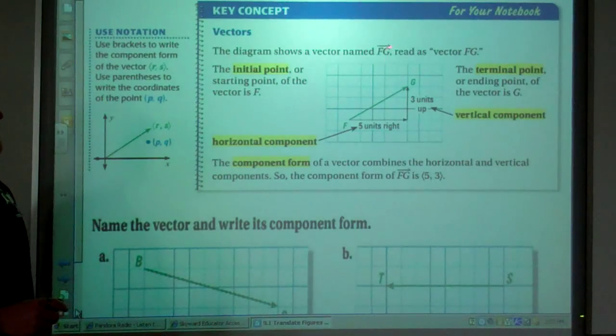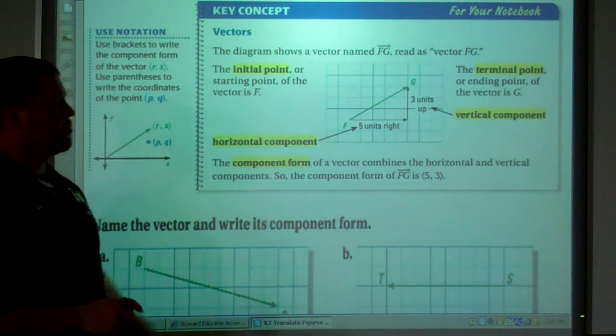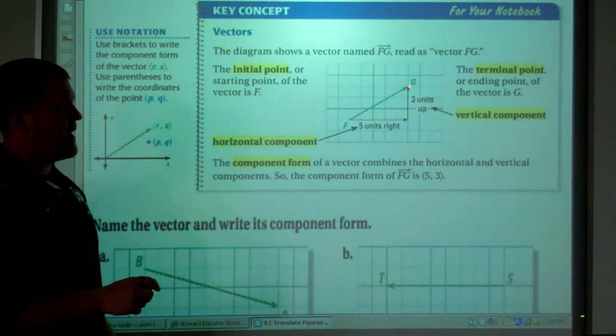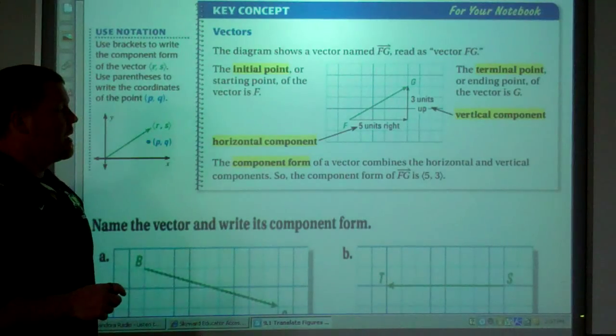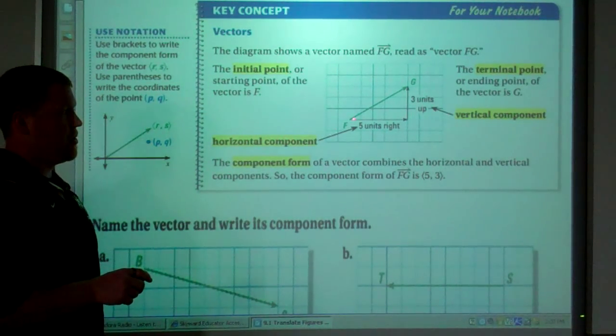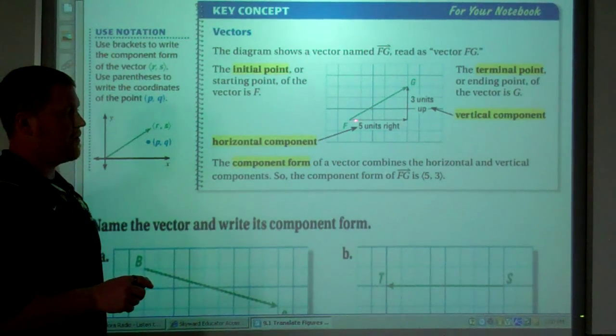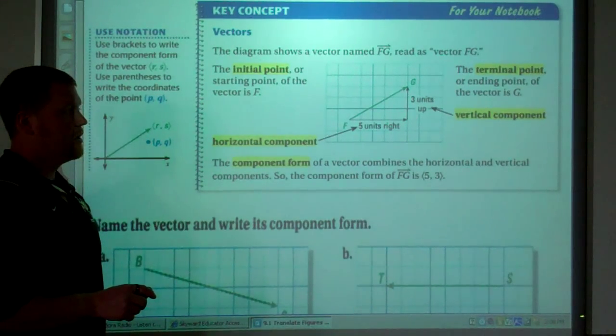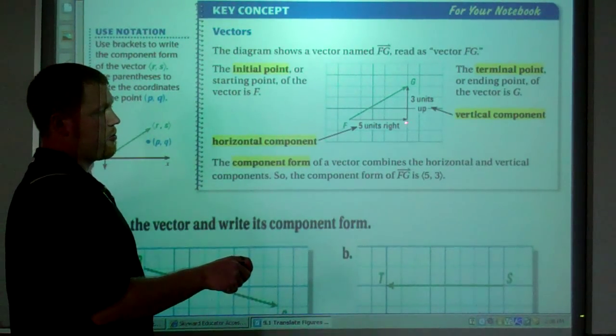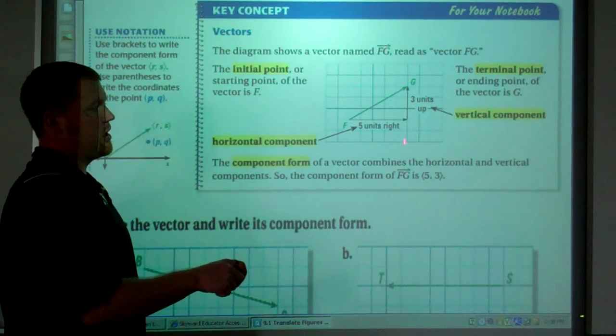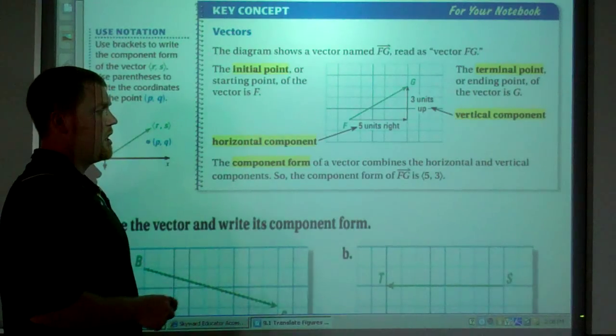The diagram shows a vector named vector FG. The initial point is point F. The terminal point, where you end, is point G. So initial point, terminal point, where you start, where you end. You have a horizontal component. So from point F, how am I going to get to point G? My horizontal component is five units to the right. And in math, when we talk about right, we associate that with positive numbers. And then three units up to get to point G. And again, up we associate with a positive number. And that's the vertical component. So you got horizontal and vertical components.